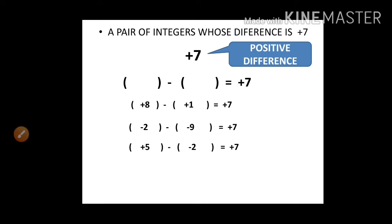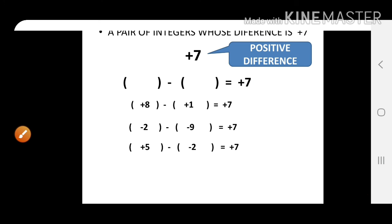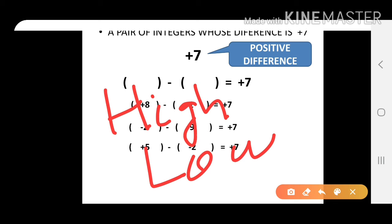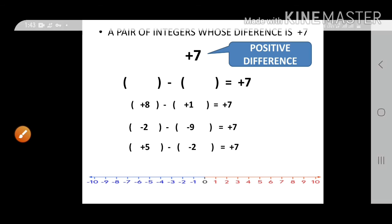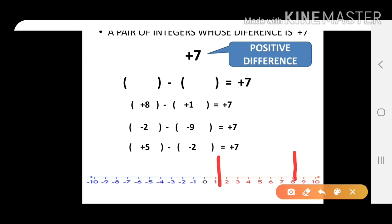Now for a pair of integers whose difference is plus 7. Difference means the gap between two integers. To get a positive difference, we go from a higher position to a lower position. On the number line, take plus 8 and plus 1: the gap between them is 7. Since we're taking a bigger positive minus a smaller positive — high to low — the answer is plus 7.